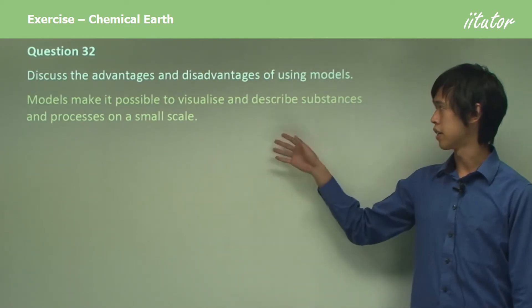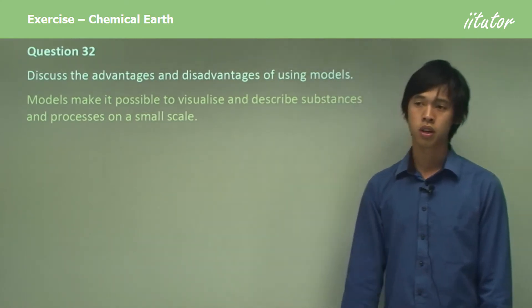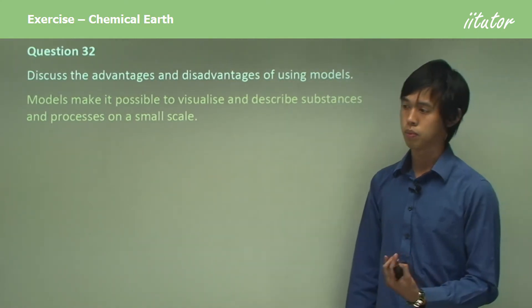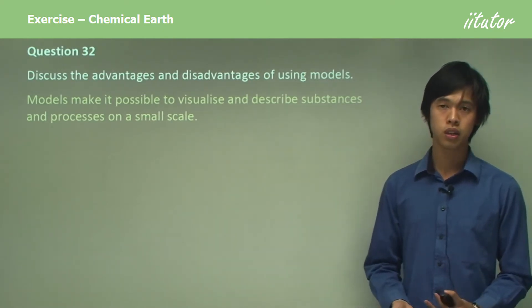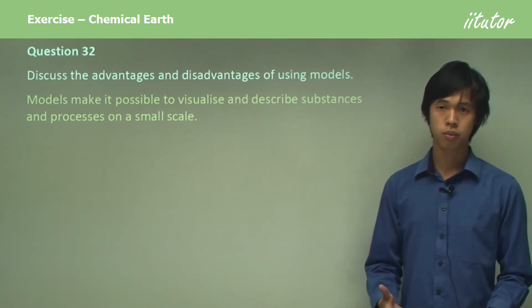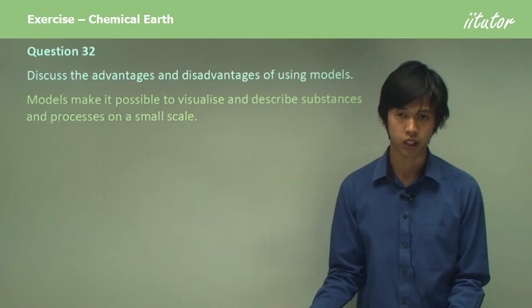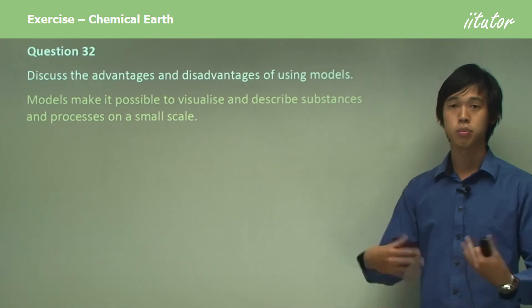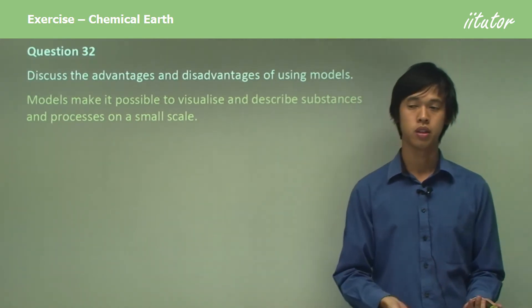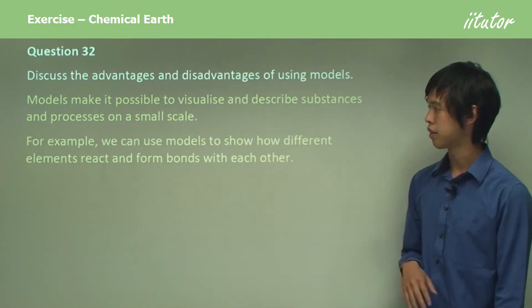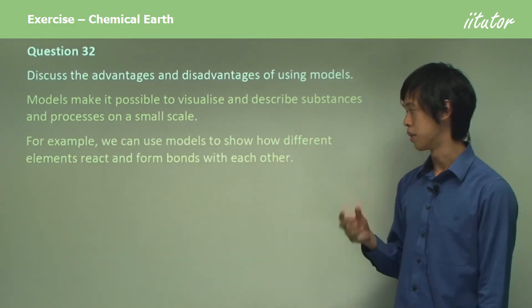Models make it possible to visualize and describe substances and processes on a small scale. For instance, a computer model would be something that you type into a computer — a program that you create to simulate something that's happening in real life. We're using that model to predict something that will happen in real life. For example, we can use models to show how different elements react and form bonds with each other.